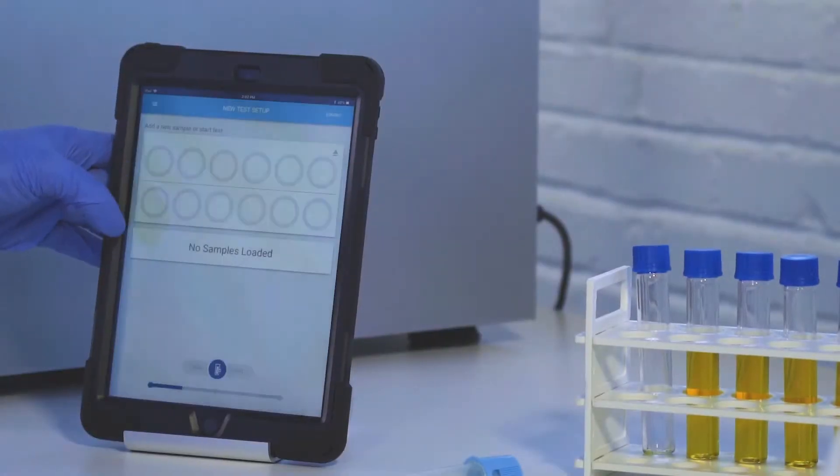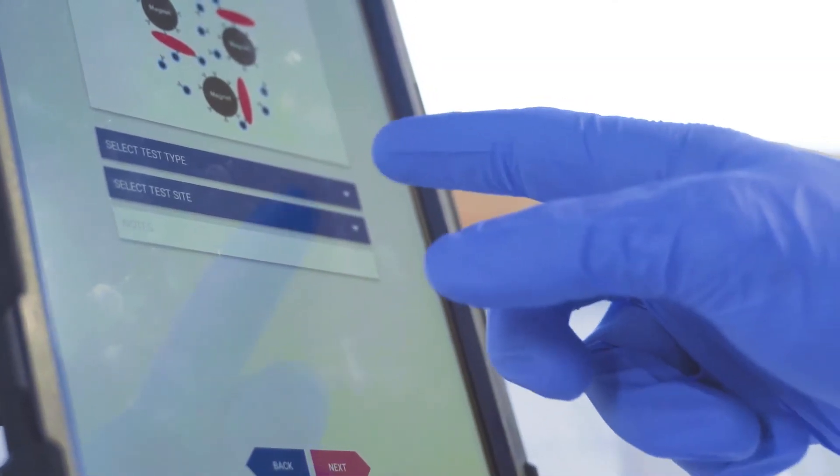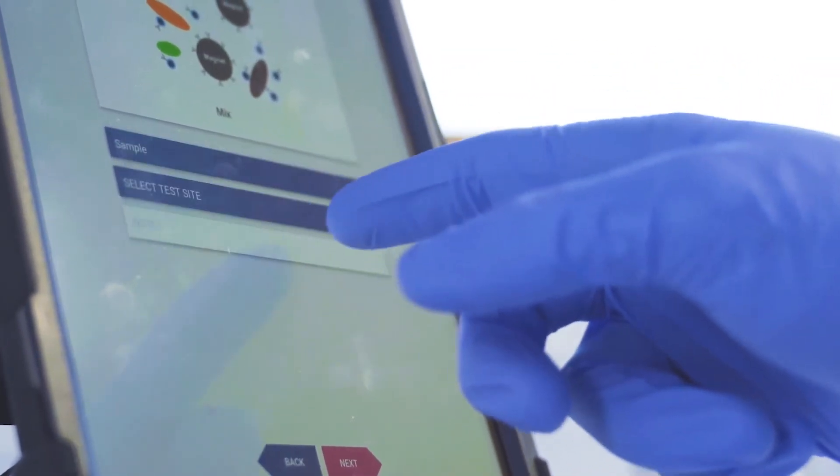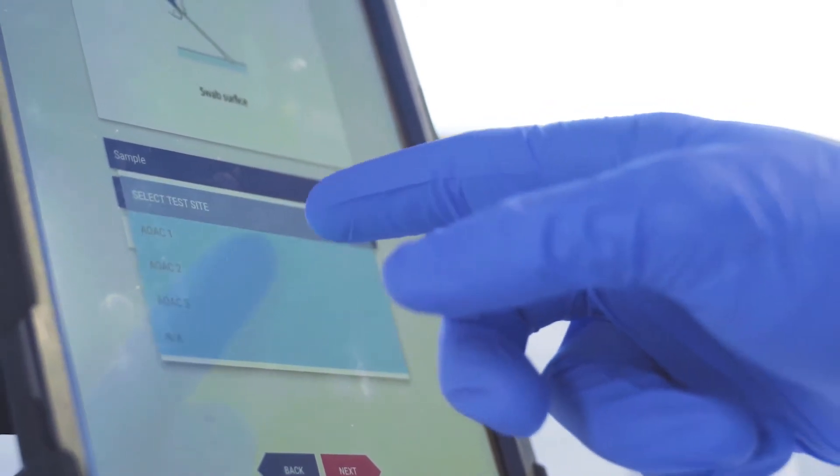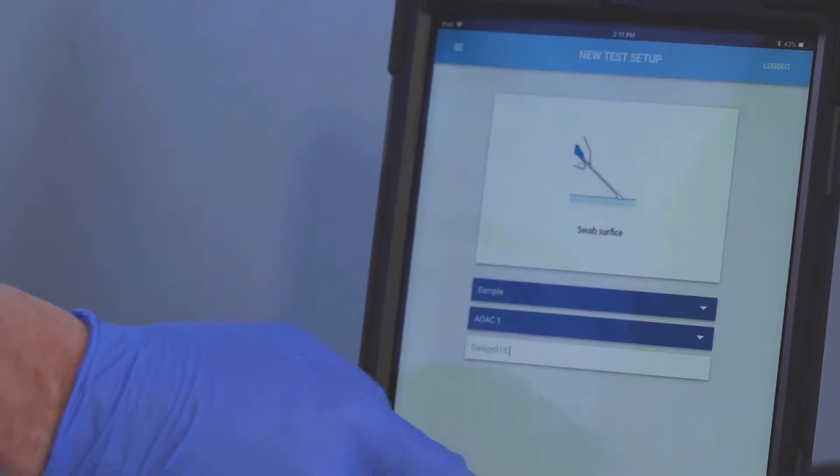With environmental samples locked and ready, use the control pad to start the test by simply clicking on New Test Setup. Next, select the type of test, the pre-programmed test site number, and location.